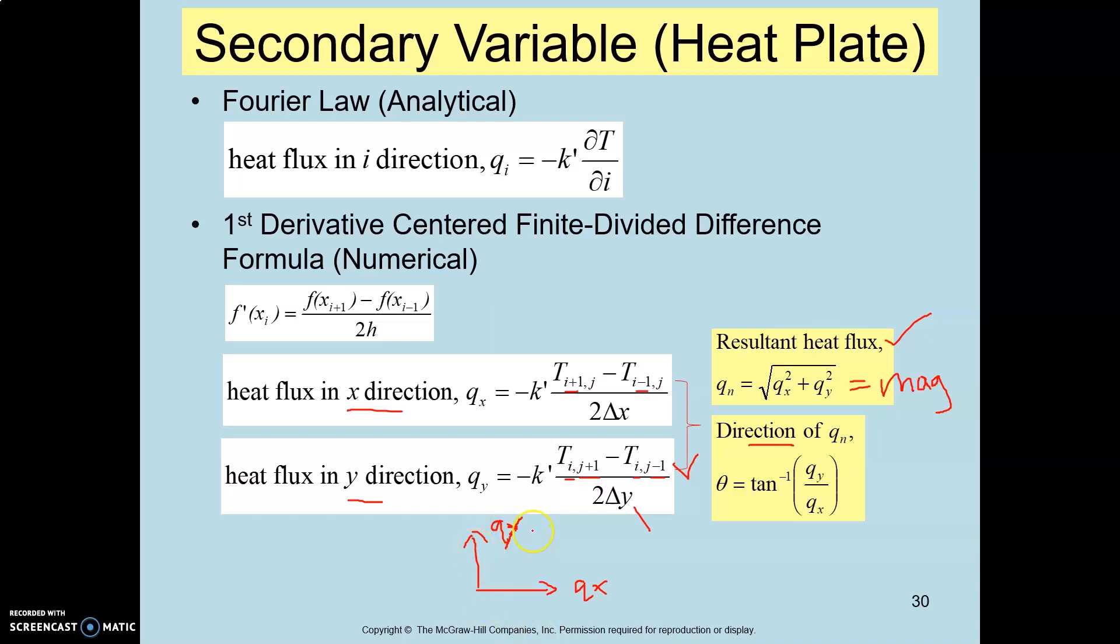For this case, your heat flux Y is positive 10, your X is positive 5. So you can find the direction by using this formula: you take 10 divided by 5 and then just substitute the arc tangent.